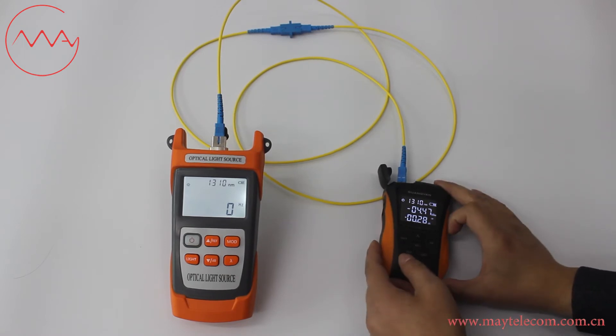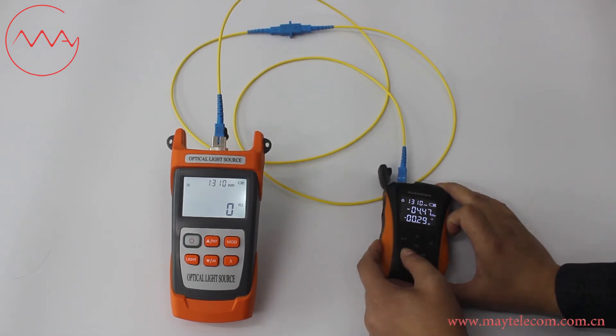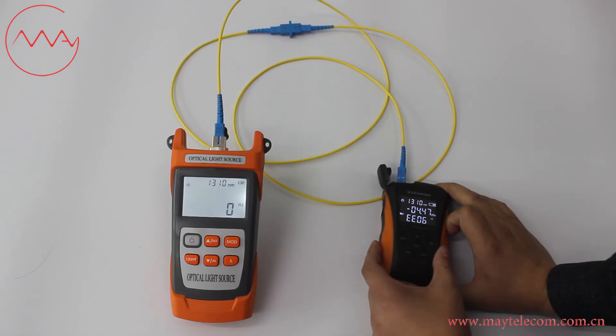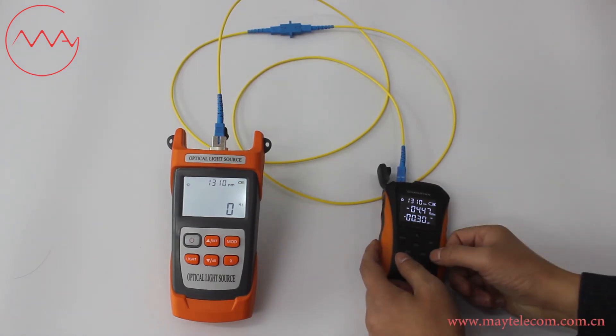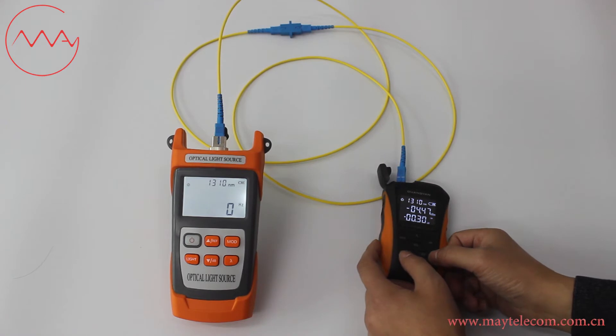Long-press the Reference button to save the testing data. The file name is EE06. Then long-press the Reference button and LED button together.